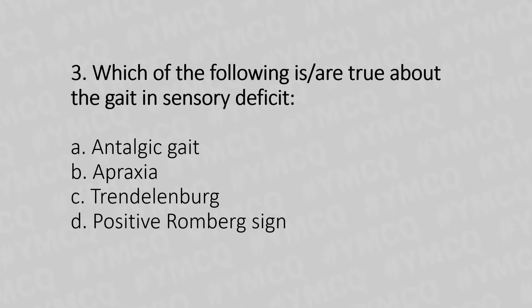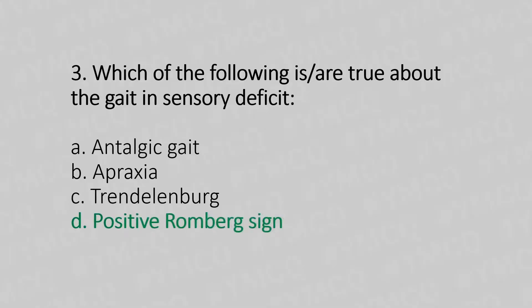Question 3: Which of the following is true about the gait in sensory deficit? Option A: antalgic gait. Option B: apraxia. Option C: Trendelenburg. Option D: positive Romberg sign. The answer is option D — positive Romberg sign.